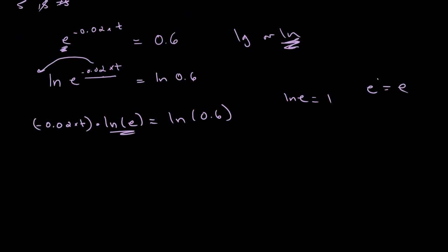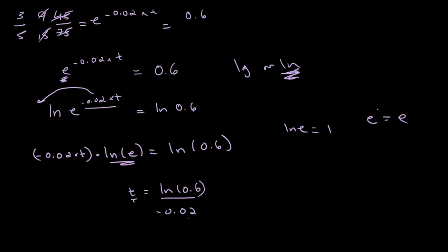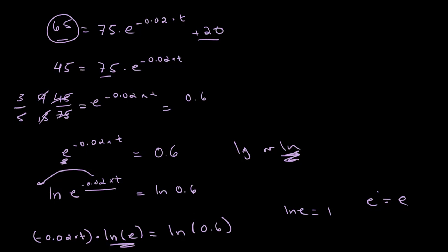And so, we get negative 0.02 times T is equal to ln of 0.6. Move the negative 0.02 over. So, we get ln of 0.6 divided by negative 0.02 is equal to the time at which the temperature of our chai was equal to 65 degrees centigrade.